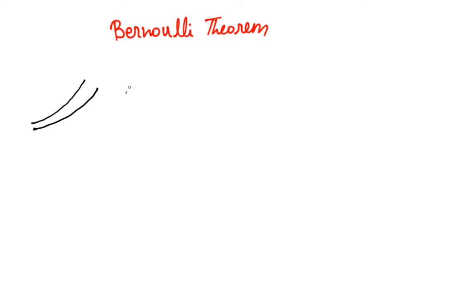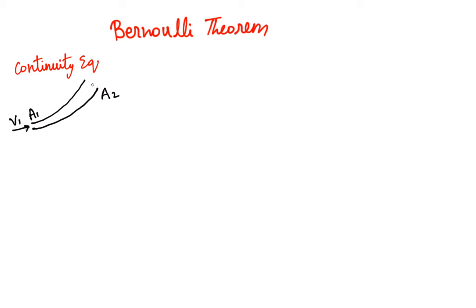So what is the continuity equation? Let's say there's a tube that is not uniform. The cross-sectional area here is a1 and the area at the other end is a2. The fluid enters here with a velocity v1 and exits the other end with velocity v2. Is there any relation between these two — any constraint we can identify?